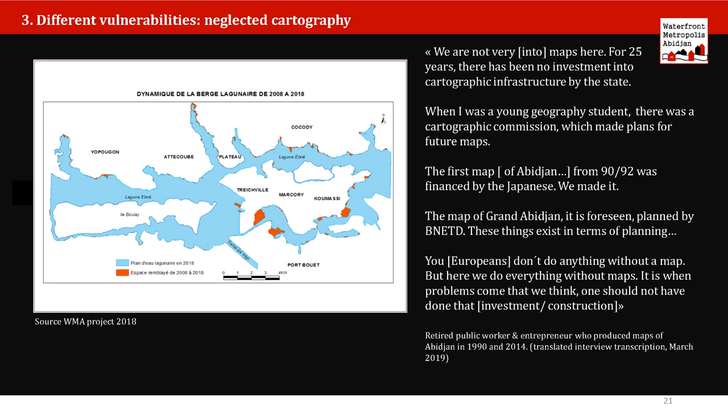Inundations are a big problem in Abidjan, but the question is whether it's climate change or whether these human factors are also behind this. Another issue is the question of law and land tenure. Waterfronts in Abidjan are public by law — according to maritime law, 25 meters from the natural water line are public land. But over the years land was reclaimed from the lagoon in many places while cartography was completely neglected, so nobody really knows where the natural water line actually is — it's a matter of interpretation and cannot really be controlled.